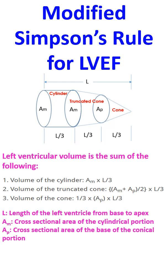In the figure, L is the length of the left ventricle from base to apex. AM is the cross-sectional area of the cylindrical portion. AP is the cross-sectional area of the base of the conical portion.